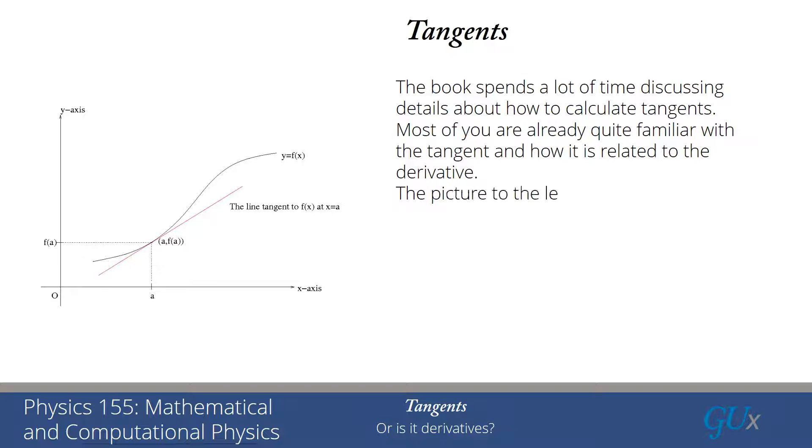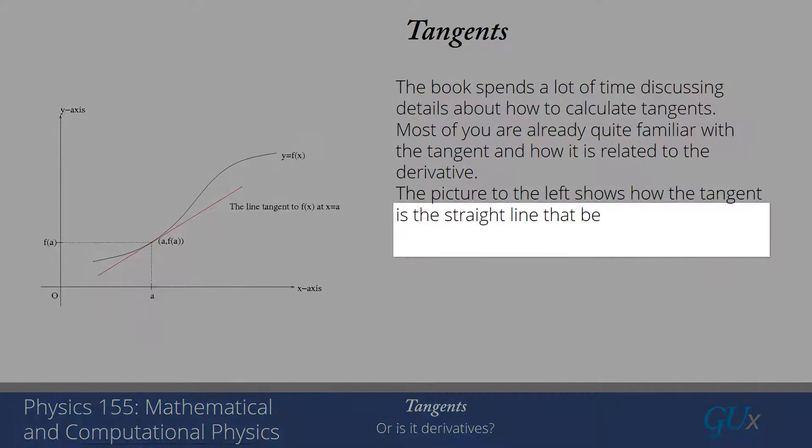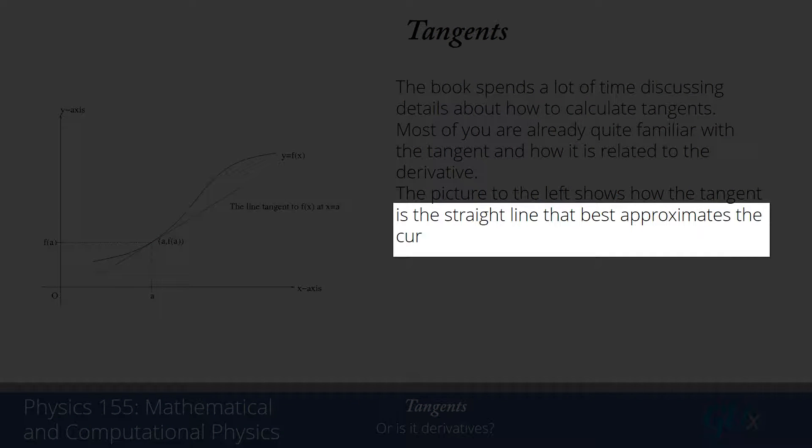The key point is that this picture shows you that the tangent is the straight line that best approximates the curved function at that particular point.